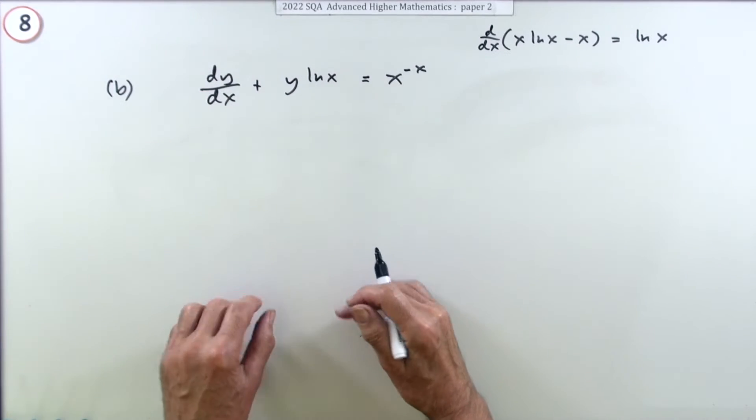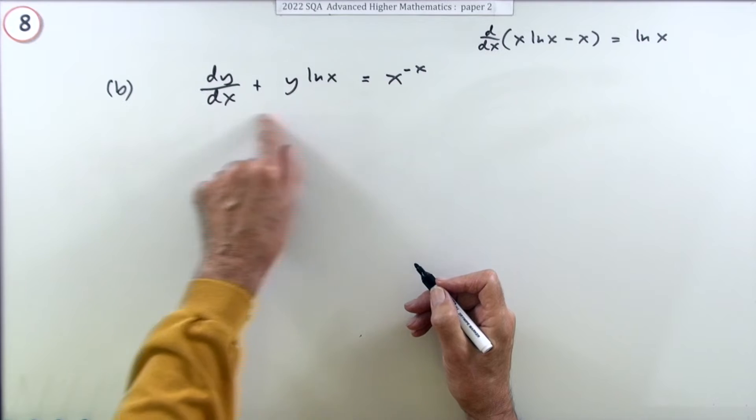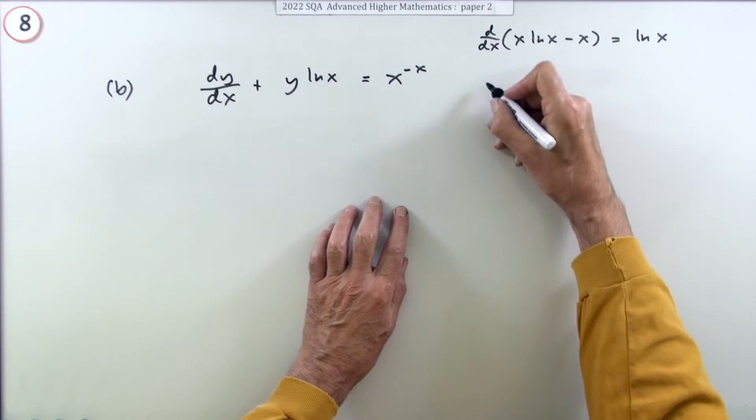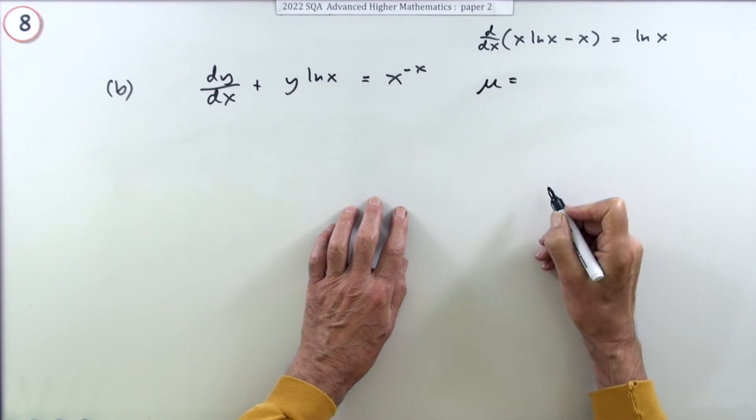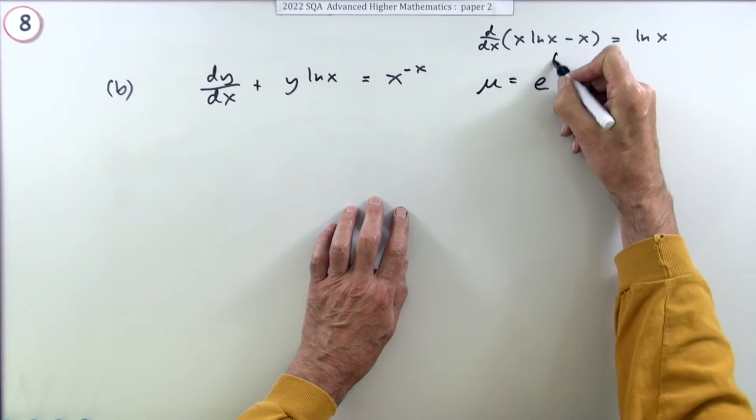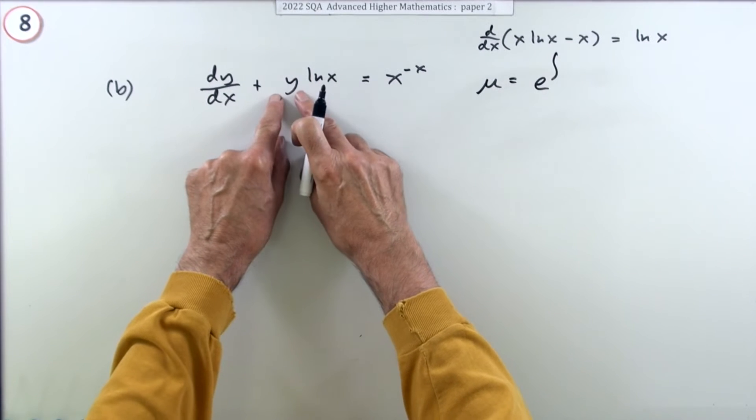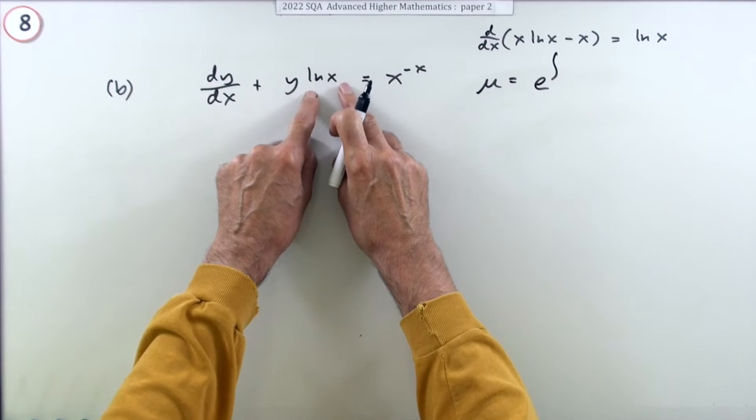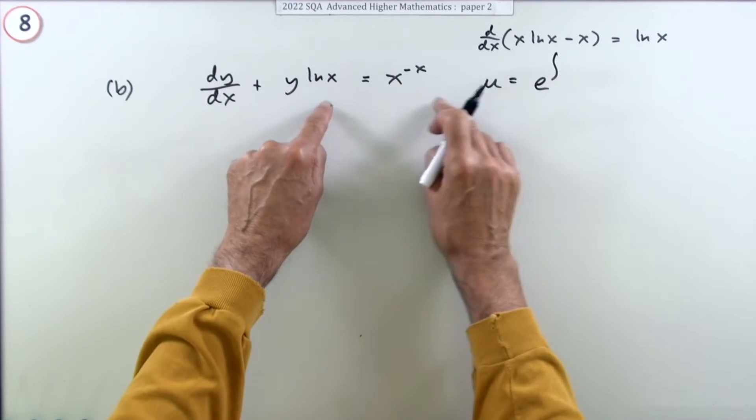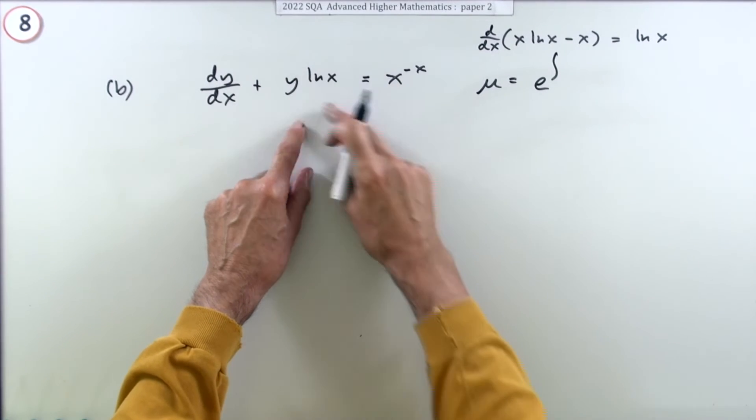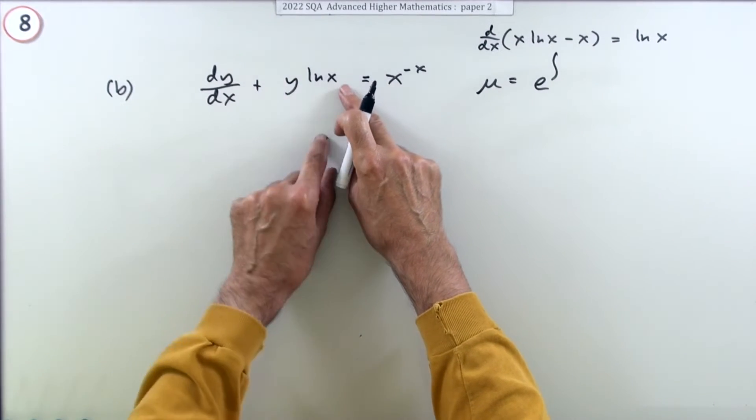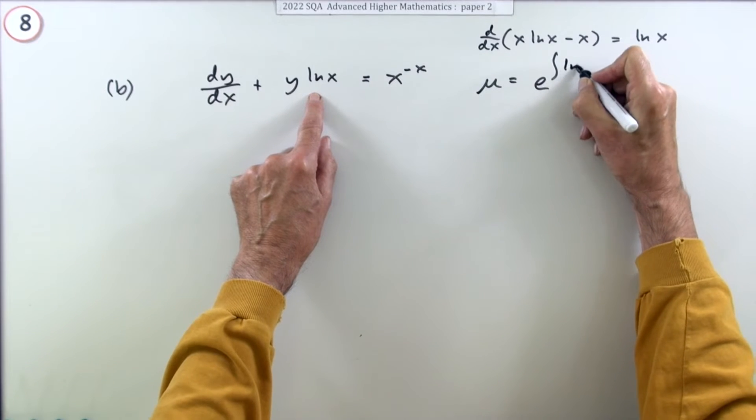Well the way that you solve this is you get an integrating factor. The integrating factor is e to the integral of whatever the little function is that's multiplying the y term, not this one, the y term. If there was anything there you'd have to bring it over and divide to get an isolated function of x multiplying the y term. So it'll be ln(x).